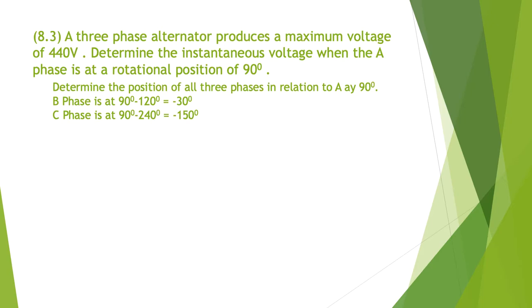Determine the position of all three phases in relation to A phase at 90 degrees. B phase is going to be at 90 minus 120, so it's going to be at minus 30. C phase is going to be at 90 degrees minus 240, that's going to be minus 150.